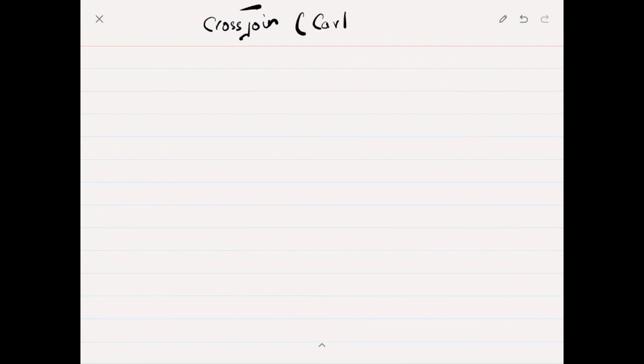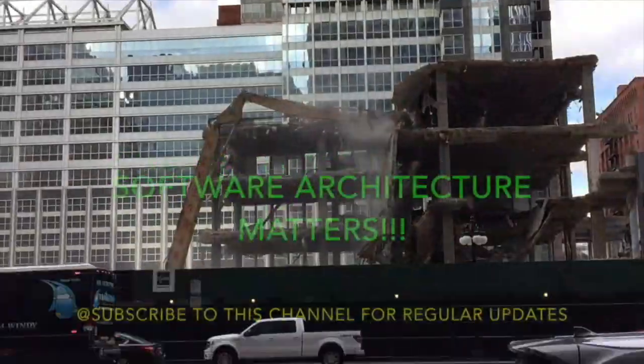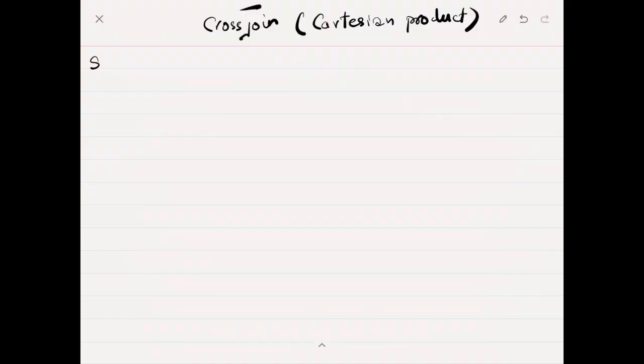What is cross join, also known as cartesian product? Let's see an example of how you use cross join. You select fields from a table and then cross join with another table. Cross join is very different from inner or outer joins.